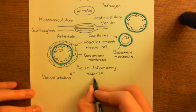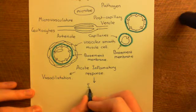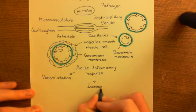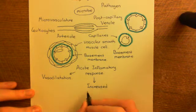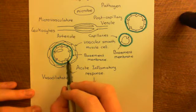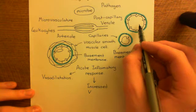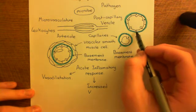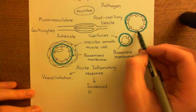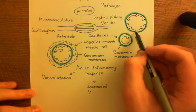The second thing you're going to do is increase vascular permeability. This is a change on the level of the endothelial cells. The endothelial cells lining the capillaries and the post-capillary venules are going to move apart, so that we open up gaps between neighbouring endothelial cells.